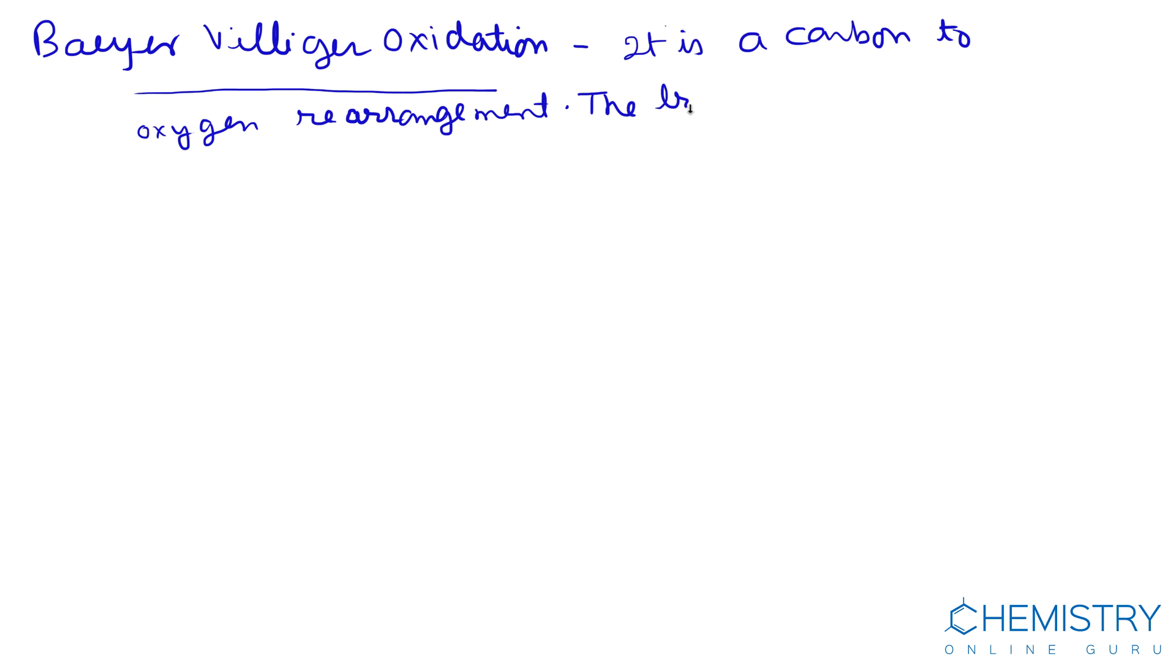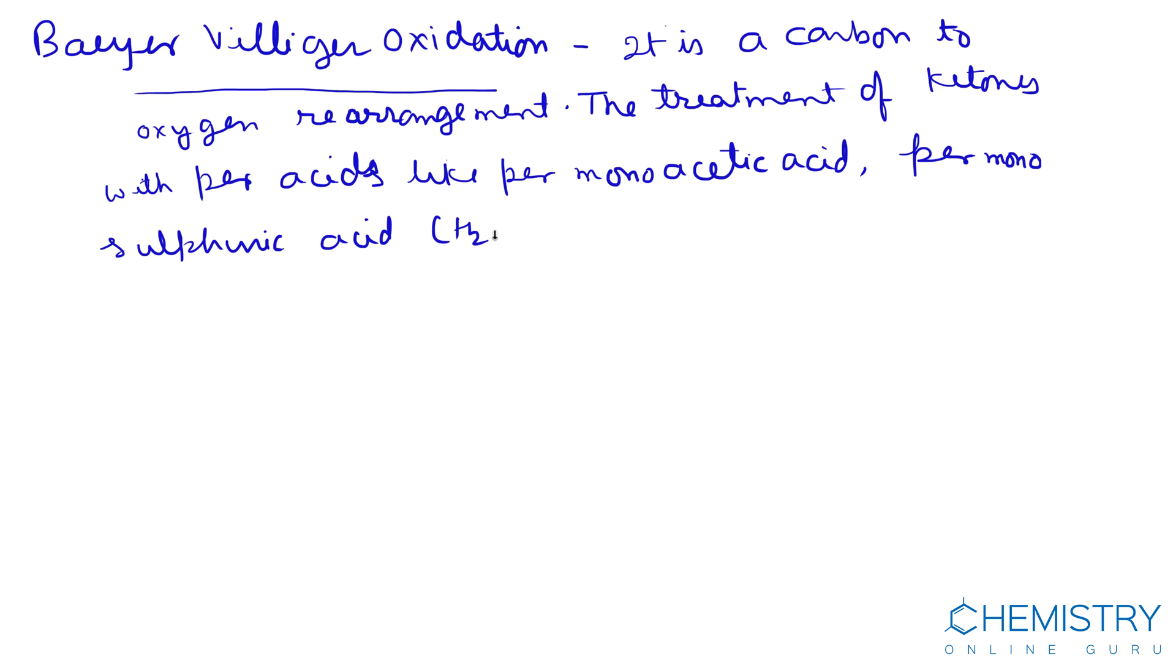The treatment of ketones with per-acids like per-mono-acetic acid, per-monosulfuric acid, per-benzoic acid with formula C6H5COOH.